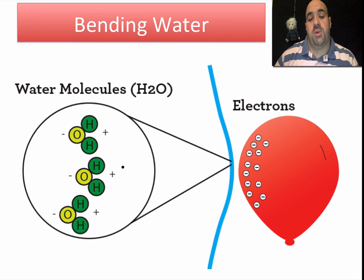Because opposites are attracting. So the water molecule, which is polar, the positive end of the water molecule is going to kind of flip and orient itself towards the negative end of the balloon, and that's why the water bends towards it. Opposites attract. So water is a polar molecule.